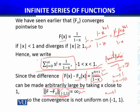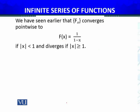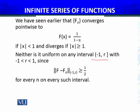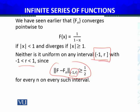Therefore the supremum of |f(x) − f_n(x)| over the set (−1, 1) approaches infinity as x approaches 1. For uniform convergence, we need the limit as n → ∞ of ‖f − f_n‖ to equal zero, but it does not. So this convergence is point-wise but not uniform. Even for a sub-interval (−1, r) where r ∈ (−1, 1), the norm ‖f − f_n‖ over that interval can be ≥ 1/2, so the limit is not zero and convergence is not uniform there either.